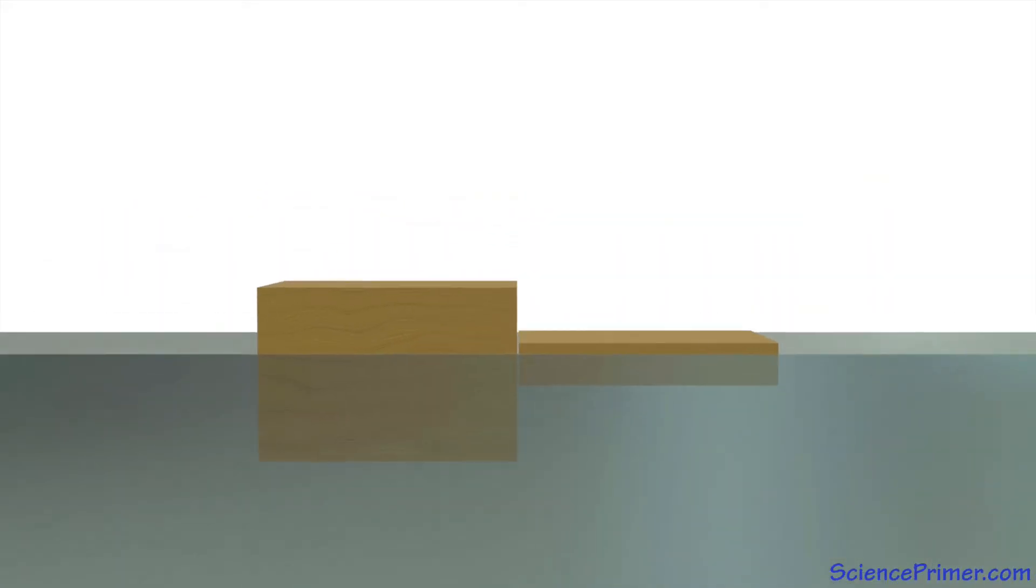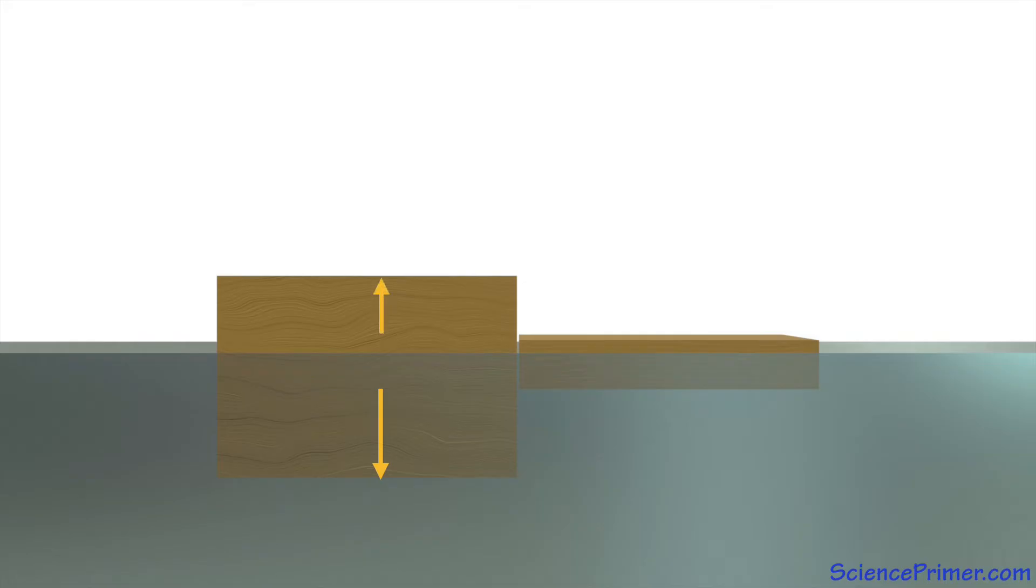Consider placing two blocks of wood in the water, one relatively thick piece and one much thinner piece. Both blocks displace water until the pressure is equal at a depth of compensation. When they both stop sinking, the taller block will have sunk deeper and still rise higher above the water. This is true if both pieces of wood have the same density. If the thinner block is slightly denser, it will sink even lower.